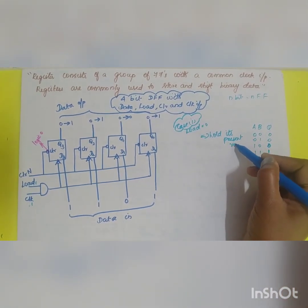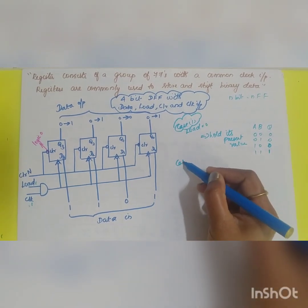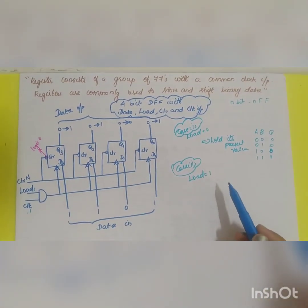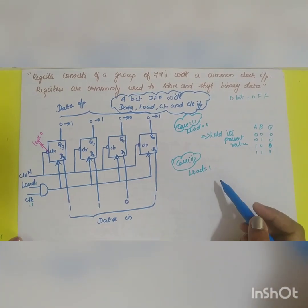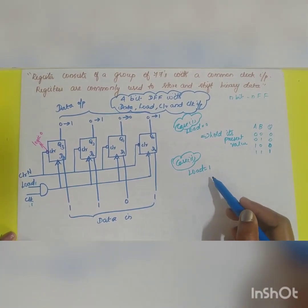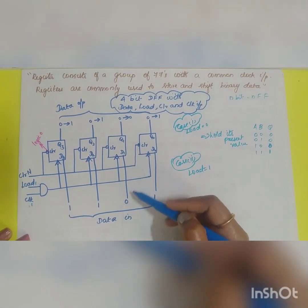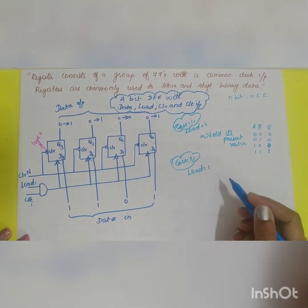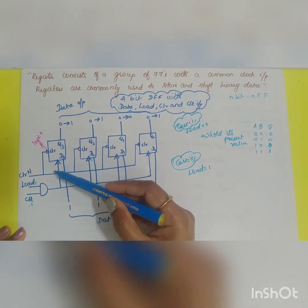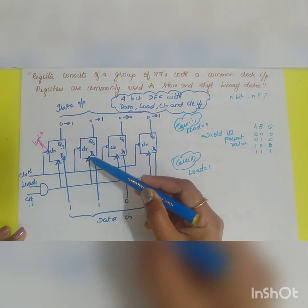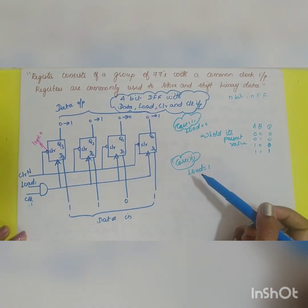Whereas in case 2, when the load is equal to 1, the clock is transmitted to the flip-flop and the data will be applied to the D input. The data will be loaded into the flip-flop during the negative triggering pulse or during the falling edge of the clock.